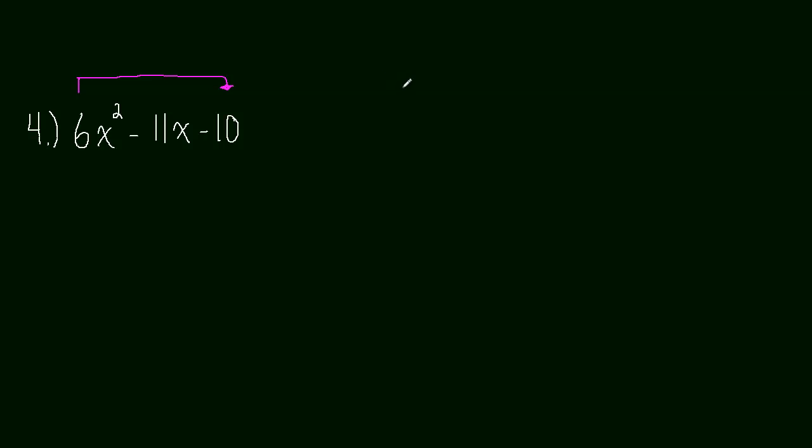So let's try our method where we actually take this 6 and we multiply by this 10. And we're going to come out with 60. And now we're going to have to find the factors of 60 that add up to negative 11. So, sorry, negative 60.